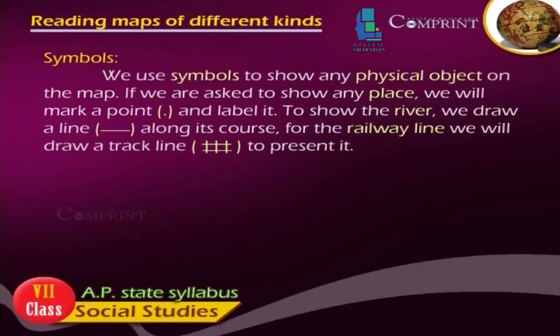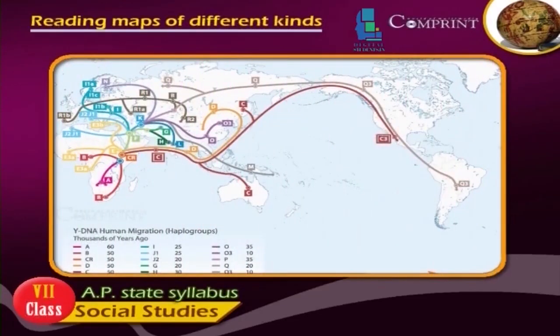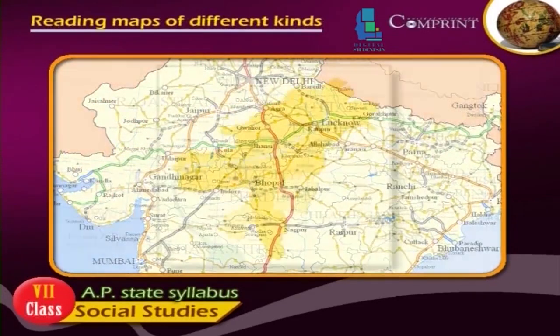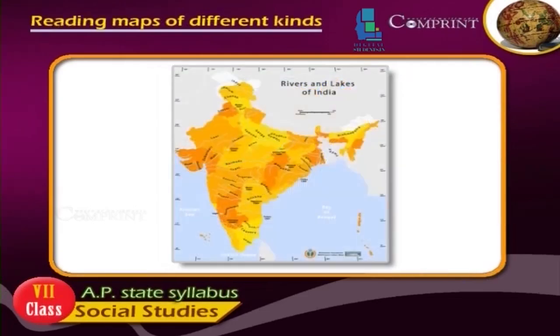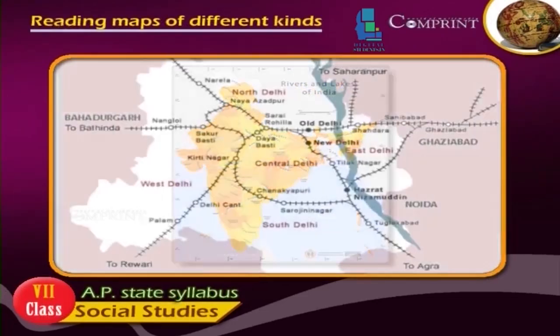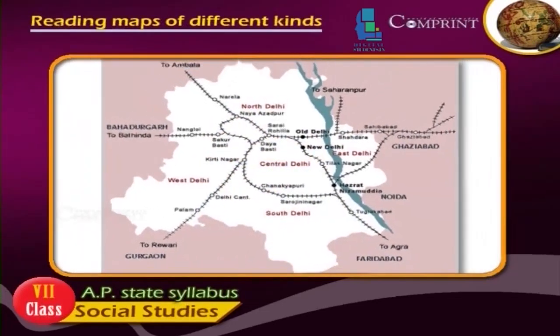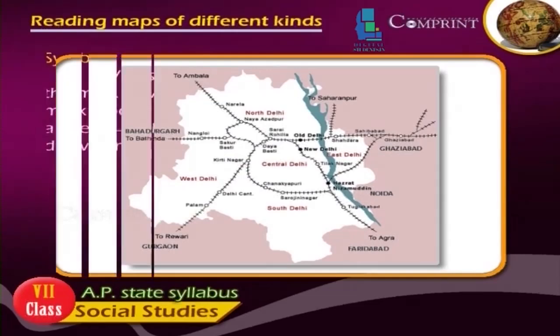If we are asked to show any place, we will mark a point and label it. To show the river, we draw a line along its course. For the railway line, we will draw a track line to present it.